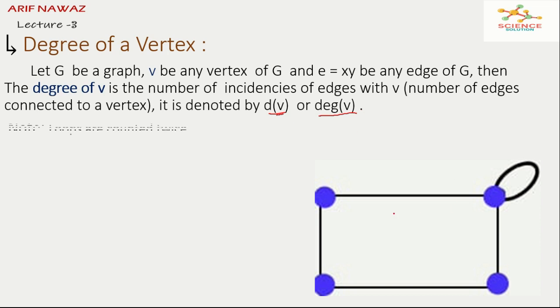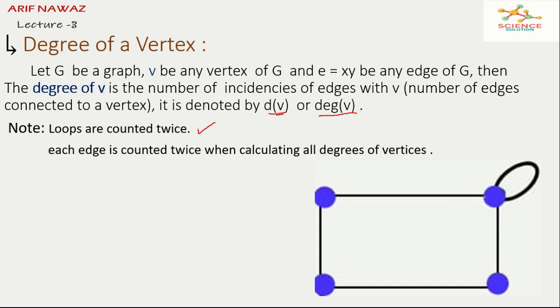We also know loops are counted twice as we know each edge is counted twice when calculating all degrees of vertices. It means that one edge is connected with two vertices with both of its two ends. To explain this we see an example.